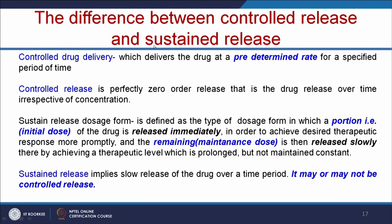The difference between controlled and sustained release: controlled drug delivery delivers the drug at a predetermined rate for a specified period of time and is perfectly zero-order release, meaning drug release over time is irrespective of concentration. In sustained release, an initial dose is released immediately to achieve the desired therapeutic response promptly, and then the remaining maintenance dose is released slowly, achieving a prolonged but not necessarily constant therapeutic level. Sustained release implies slow release and may or may not be a controlled release.